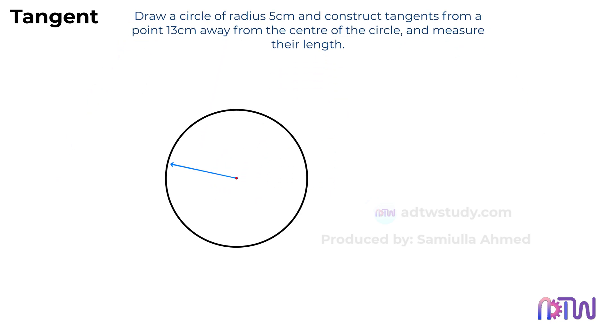We need to draw a circle with a radius of 5 centimeters, mark a point 13 centimeters away from the center of the circle, and draw tangents from that point to the circle. With this information in mind, let's start drawing.